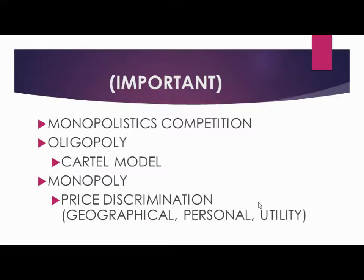In oligopoly, rival firms may come together to form a cartel to maximize profit. A cartel is essentially an agreement among rival firms where pricing is fixed — for example, deciding to charge 100 or 500 rupees for a product. Market share and other features are jointly decided. It is simply a group of rival companies colluding together.